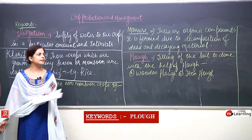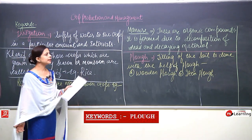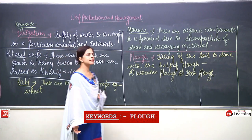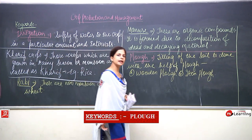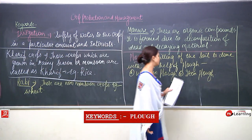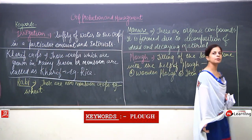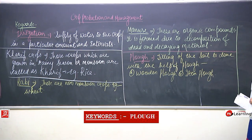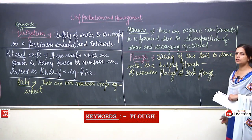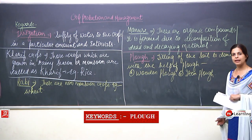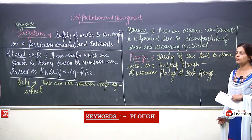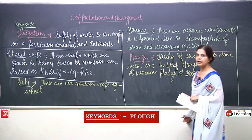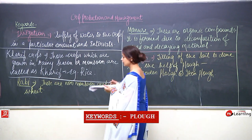Tilling is done so that the nutrients which are below can come up and be used. Aeration is increased, and as the soil becomes loose, roots can enter the soil very properly and easily. The minerals, manures, and fertilizers can get mixed into the soil very properly. These are the reasons why tilling is done, using a flaw — which can be wooden or made of iron.